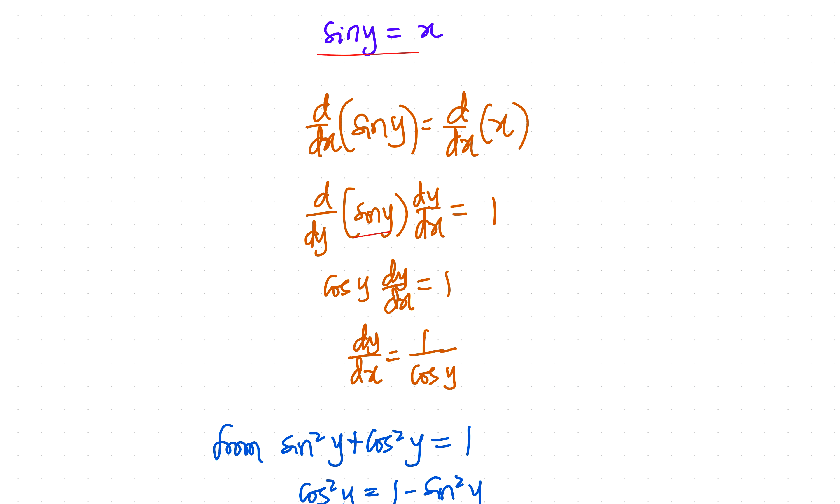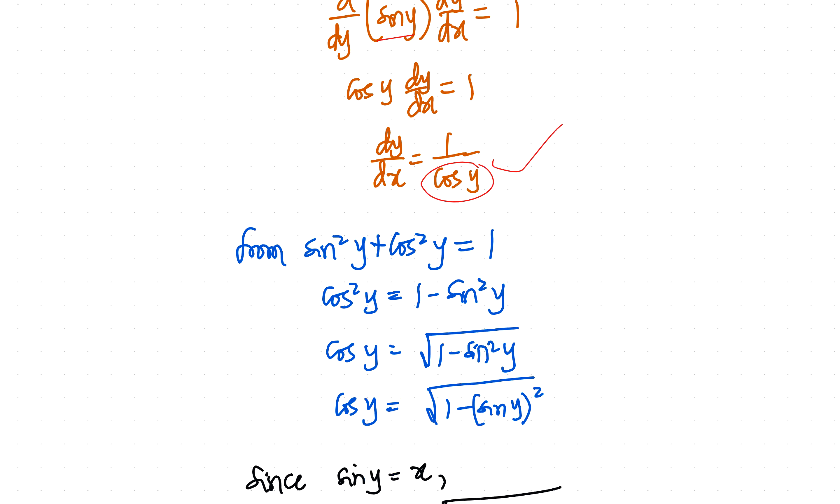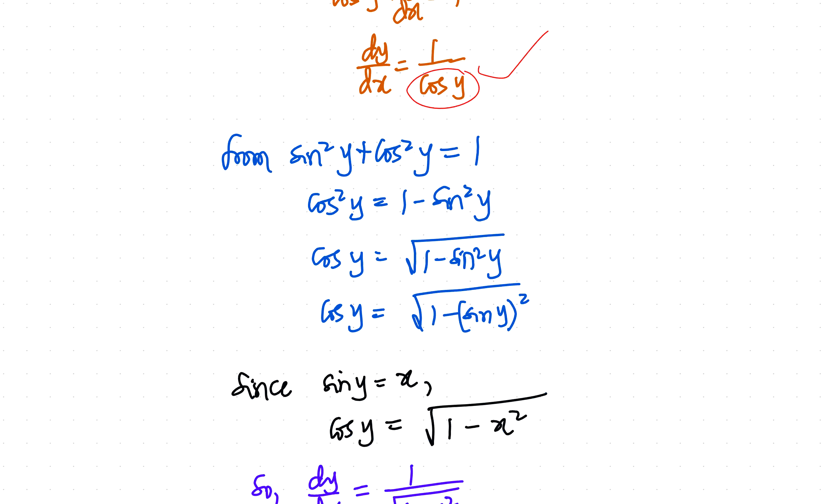So the next thing is, it's better not to leave your answer in terms of y. So how do we get rid of cos y? So, you know, this is a very popular rule in trigonometry, that sine squared of y plus cos squared of y equals one. So if that is the case, what we have here is cos y. So can we get a replacement for that in terms of this?